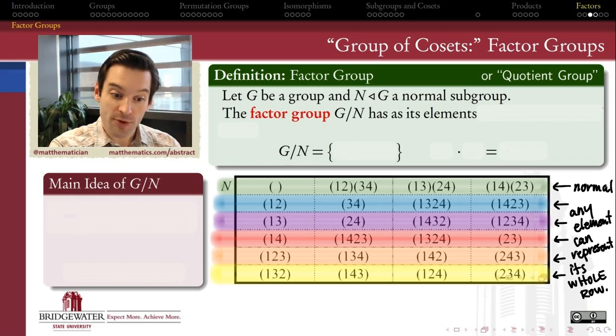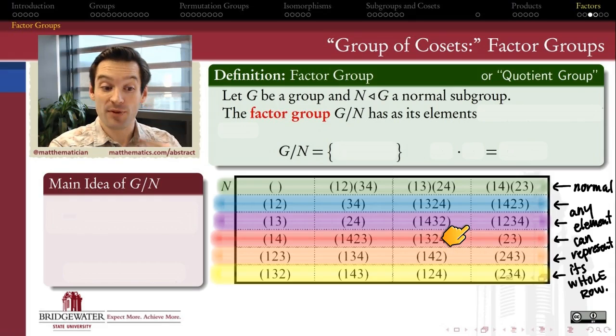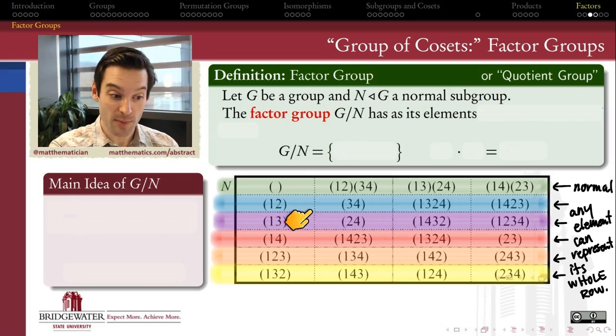And again, N needs to be a normal subgroup in order for this to work, because that's the only circumstance under which any element can represent, be an avatar for its entire row. So it doesn't matter which element we're picking from my coset, it's going to behave in the same way as every other element in the coset does.